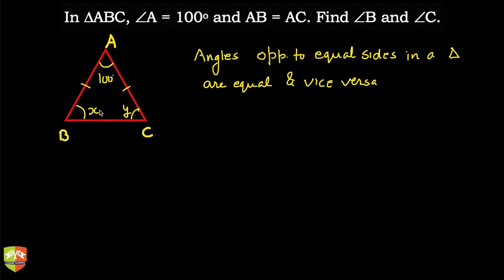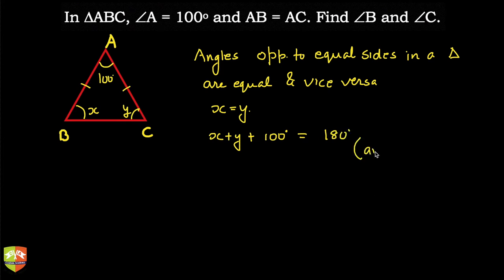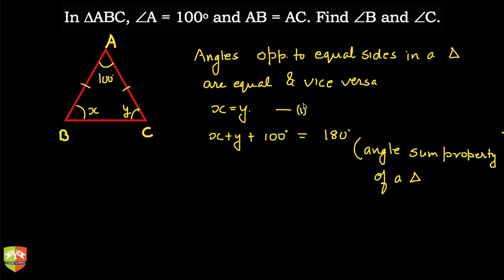So, we can say X is equal to Y. Now, X plus Y plus 100 degrees is equal to 180 degrees. And why is this? This is because of the angle sum property of a triangle — that is what we have learned. So that means I can use these two equations, equation number 1 and equation number 2, to solve this problem.